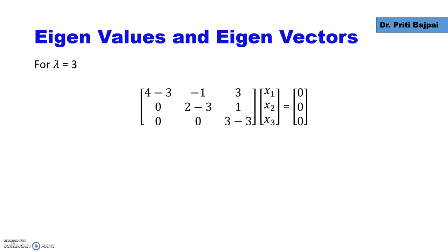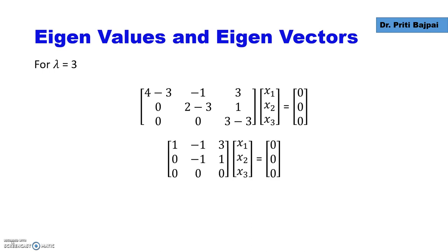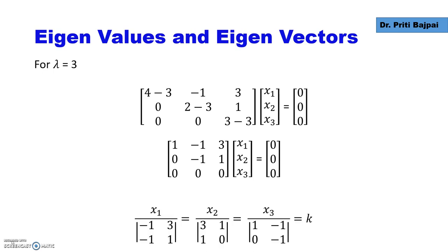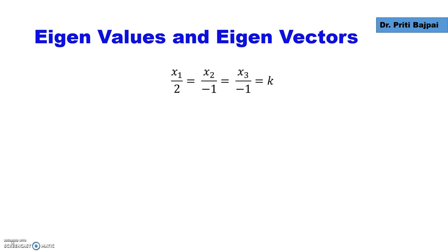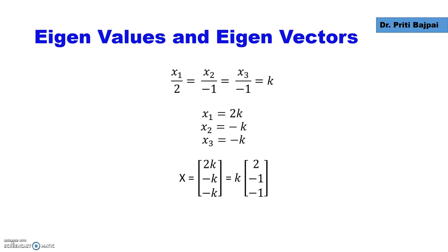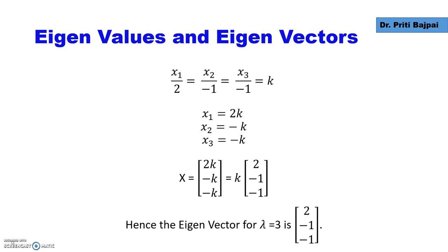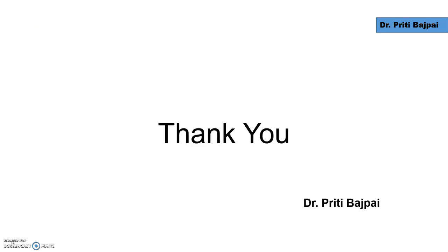For lambda equals 3, substituting in (A minus lambda I)x equals 0 gives the matrix [1, minus 1, 3], [0, minus 1, 1], [0, 0, 0]. One whole row is zero. Using the first two rows with Cramer's rule gives x1 equals 2k, x2 equals minus k, and x3 equals minus k. The eigenvector is [2k, minus k, minus k], which simplifies to [2, minus 1, minus 1] — the eigenvector corresponding to lambda equals 3.